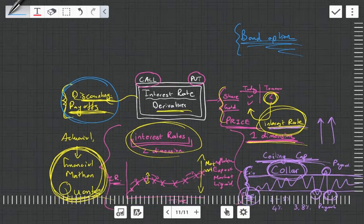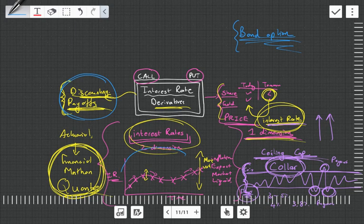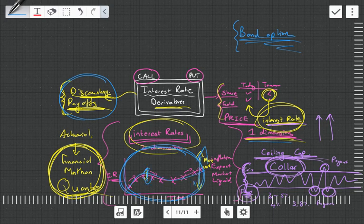The main ones being that interest rate is used in both the discounting and the payoffs, and that with interest rates we're trying to model an entire yield curve instead of just a one-dimensional price, and that this yield curve does have some varying volatility as the curve changes.